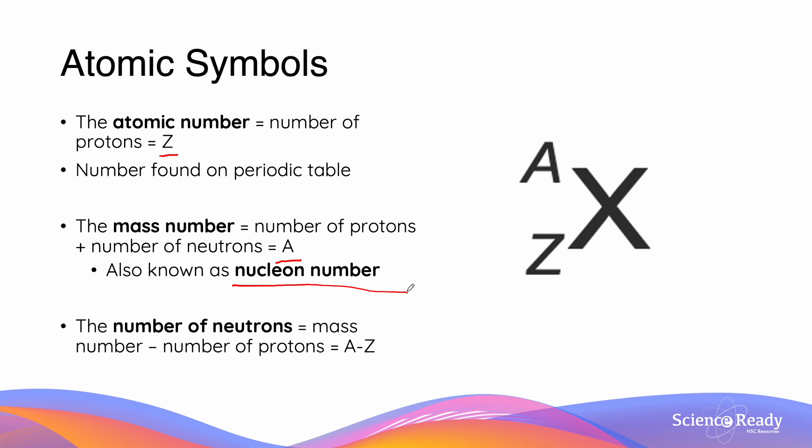Since we have the mass number, which is the number of protons and neutrons, and we have the atomic number, which is the number of protons, we can calculate the number of neutrons simply by subtracting the atomic number from the nucleon number.